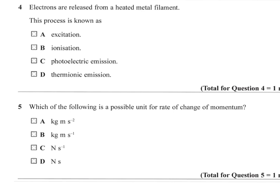Question 4. Where electrons are released from a heated metal filament. This process is known as... Well, this is just book work from your notes. That's called thermionic emission. Heat, thermionic emission released.